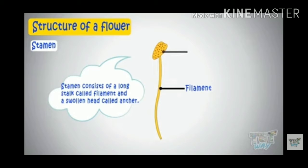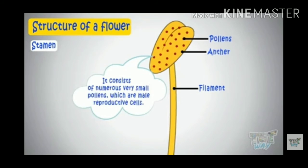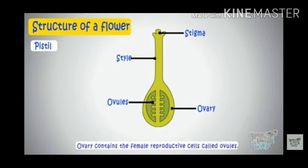The male reproductive part of a flower is stamen, which comprises of two parts. First is anther and second is filament. Anther consists of pollen grains, and on maturity this anther bursts and pollen grains are released into the environment.